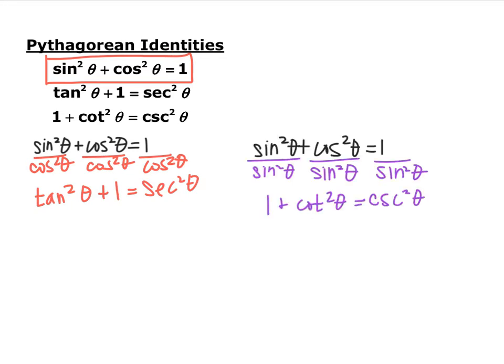Similarly, to derive the third identity, start with sine squared plus cosine squared equals 1 and divide everything by sine squared. Sine squared over sine squared is 1, cosine squared over sine squared is cotangent squared, and 1 over sine squared is cosecant squared. So just memorize the first one and know how to derive the other two.